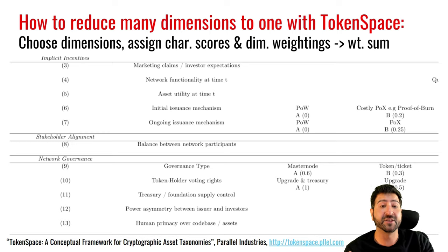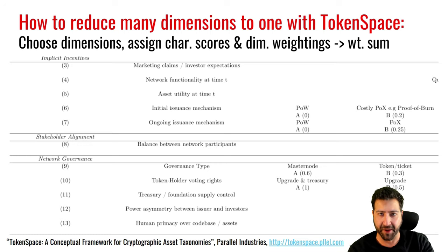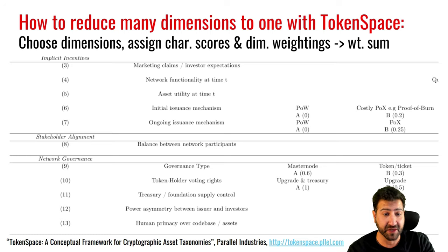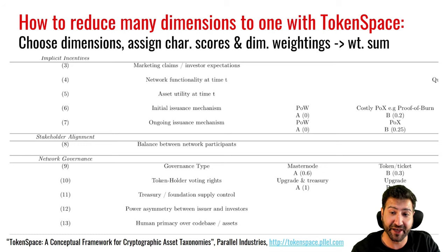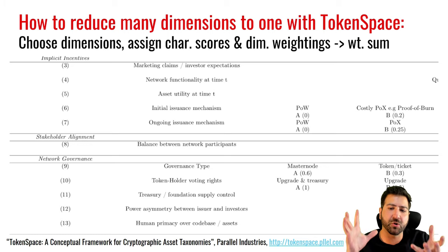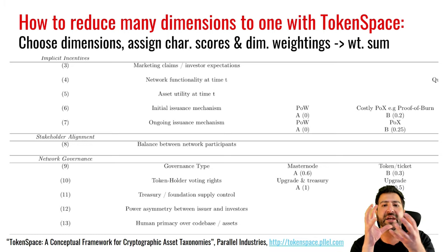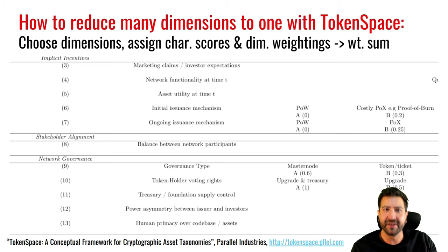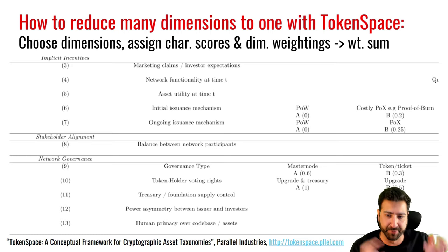What you're doing here is really dimensional reduction — taking many parameters and squashing them into one. This is a bit like what price does. We've all seen price charts, whether it's Bitcoin, orange juice, or oil. Price squashes all objective and subjective factors in the moment into a single number. Token space is doing something similar: taking a number of subjective and objective parameters and squashing them into something we can parameterize and plot on a chart.